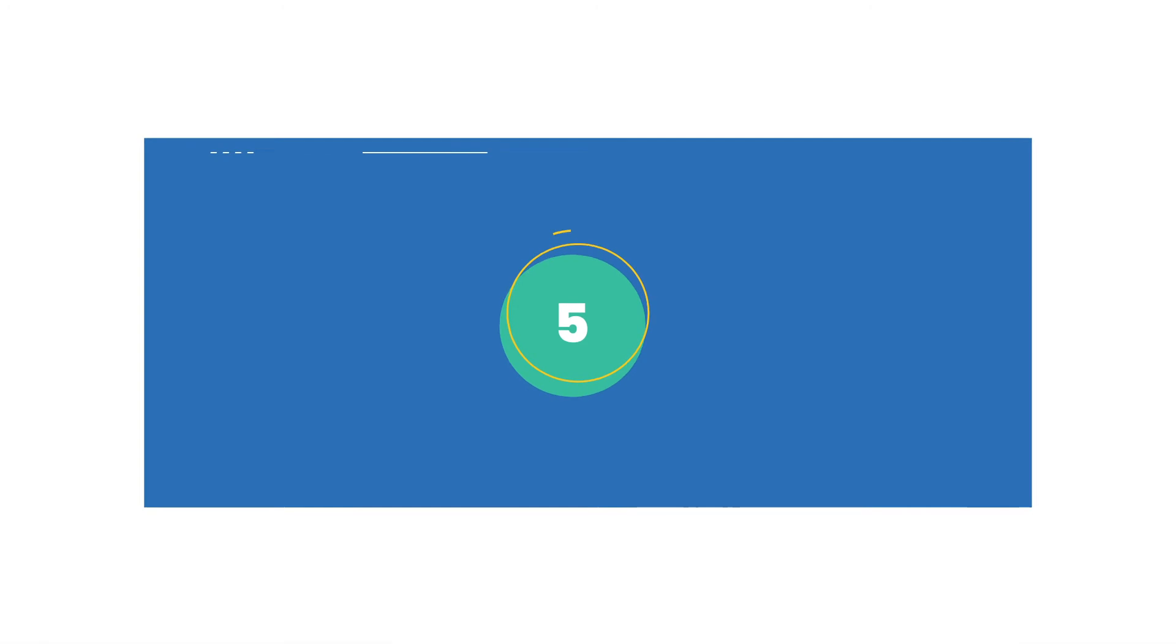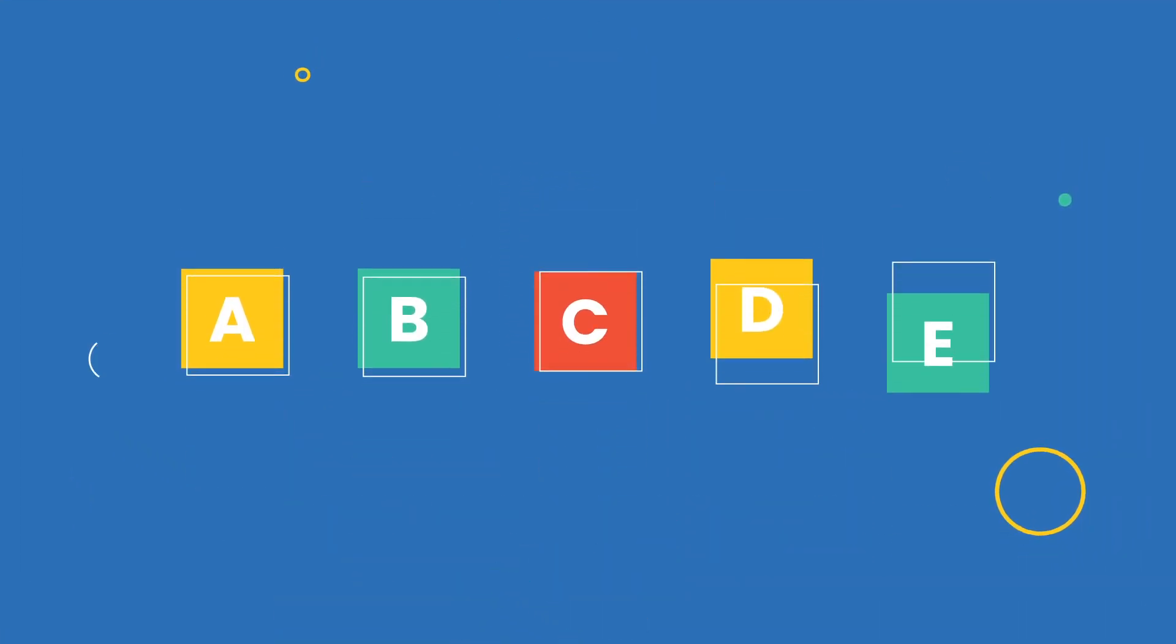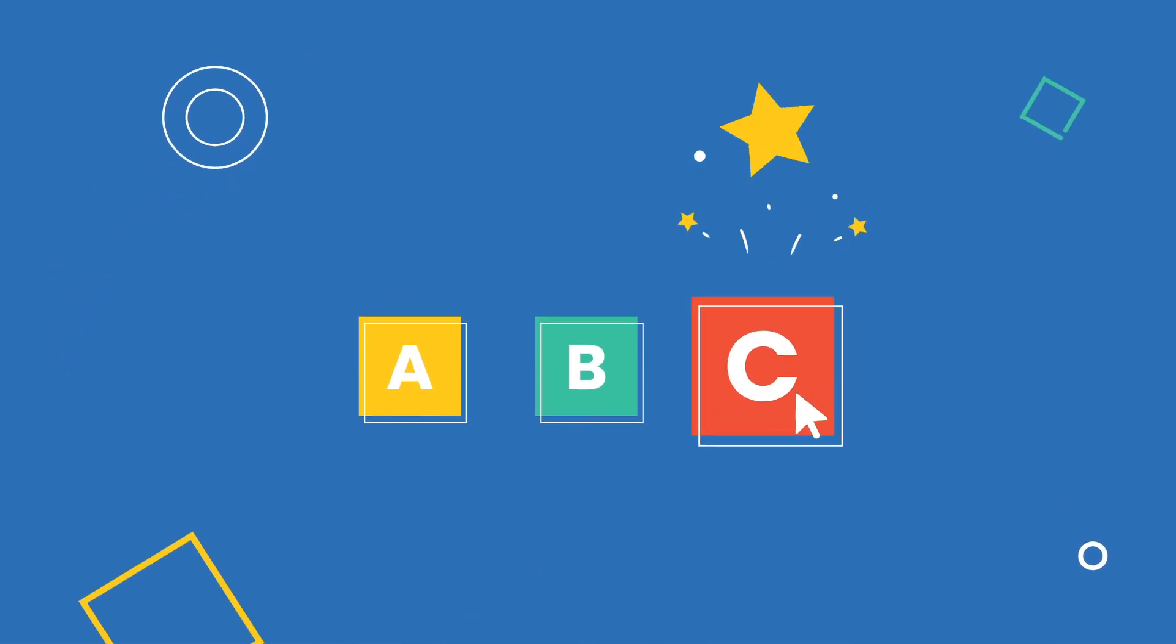Number five, embrace constraints. When you have fewer choices, you end up working on what's in front of you. Constraints lead to clarity of purpose.